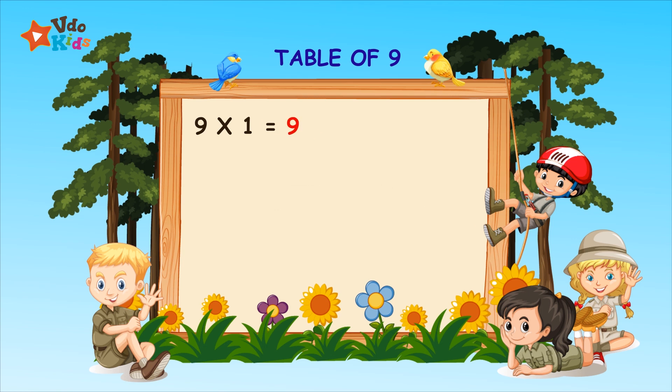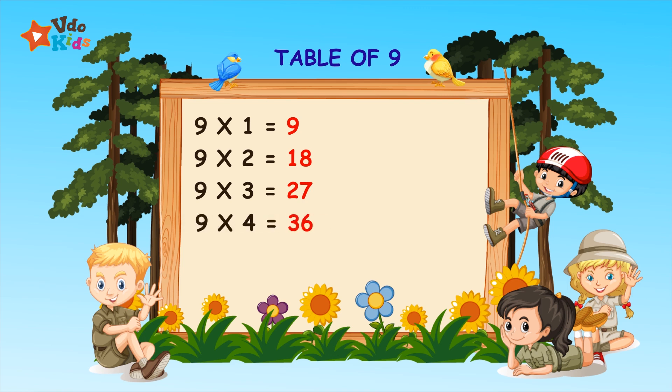9 ones are 9. 9 twos are 18. 9 threes are 27. 9 fours are 36.